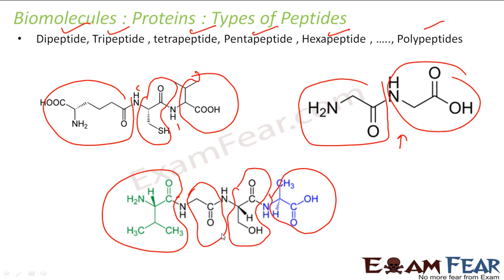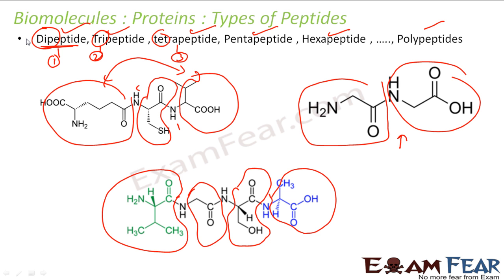If five amino acids are joined together by four bonds, it is a pentapeptide. The number of amino acids joined decides the type of peptide: dipeptide — two amino acids, tripeptide — three amino acids. Please note: dipeptide will have one bond, tri will have two bonds, tetra will have three bonds. Di, tri, tetra refers to the number of amino acids joined, not the number of bonds.